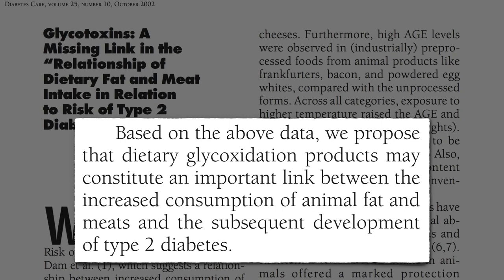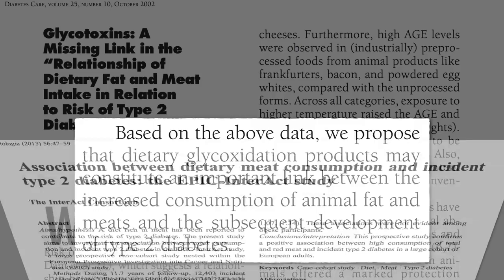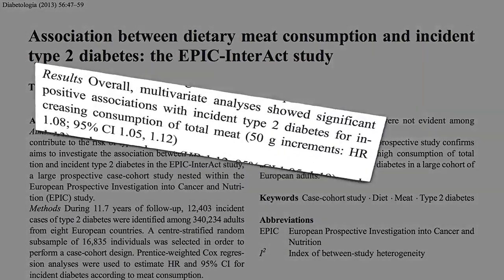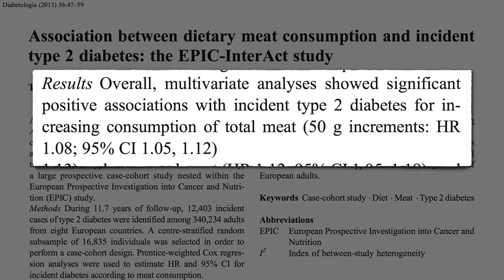Since the 2013 meta-analysis was published, this study came out in which about 17,000 people were followed for about a dozen years. They found an 8% increase in risk for every 50 grams of daily meat consumption — that's just about a quarter of a chicken breast worth of meat for the entire day — may significantly increase risk of diabetes.